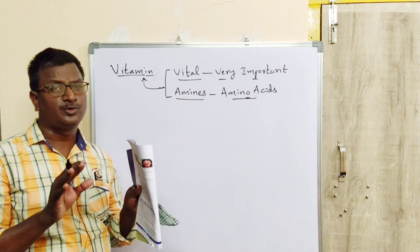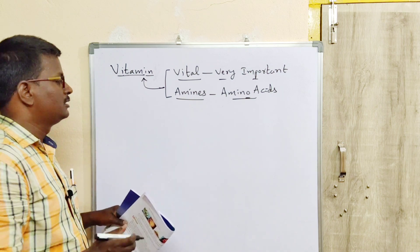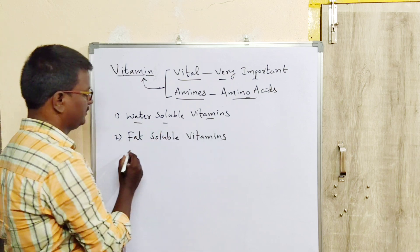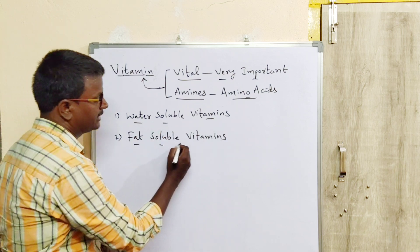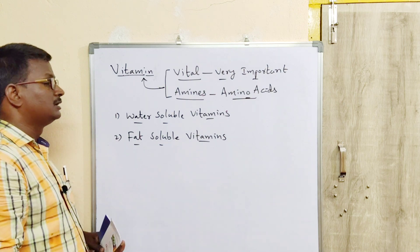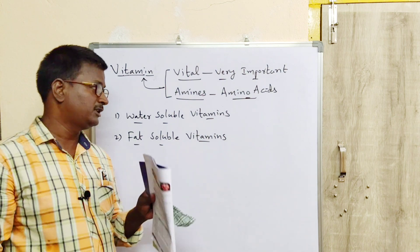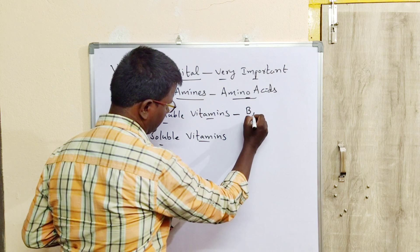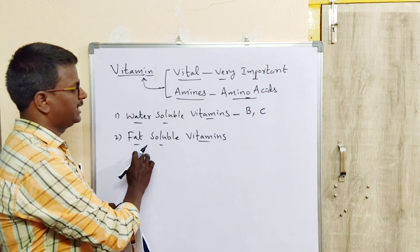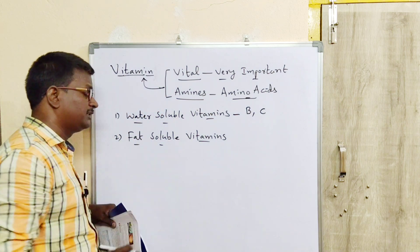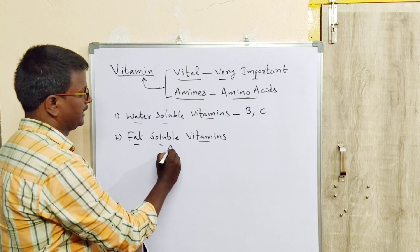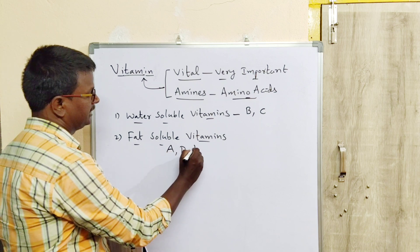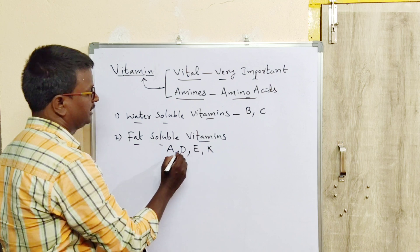Vitamins are of two types: water-soluble vitamins and fat-soluble vitamins. Water-soluble vitamins are only two types: vitamin B and vitamin C. Fat-soluble vitamins are four: vitamin A, vitamin D, vitamin E, and vitamin K.